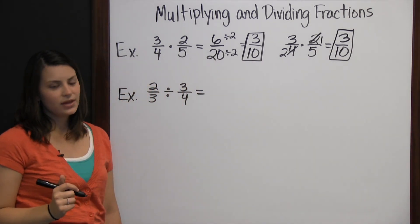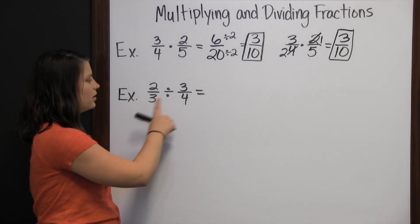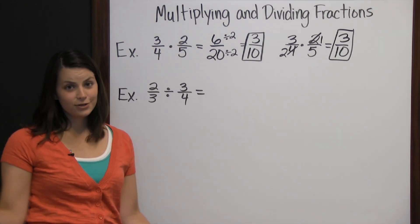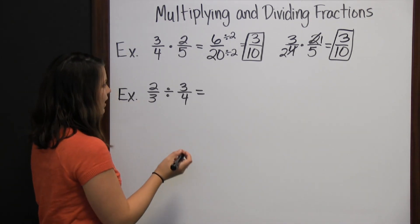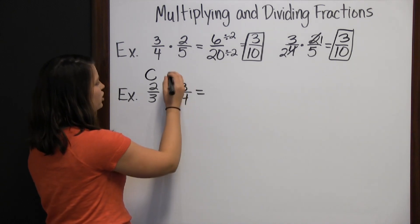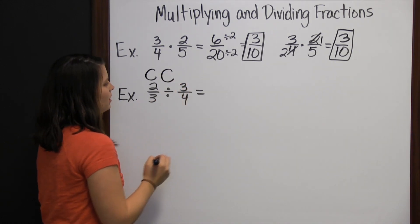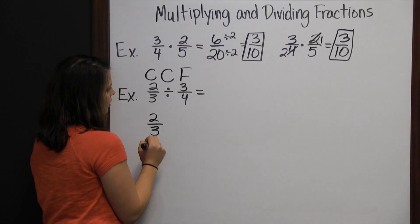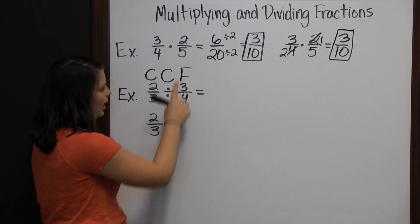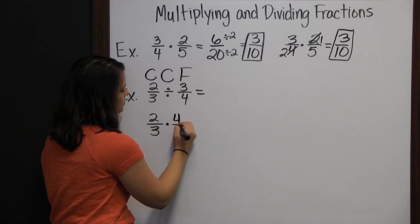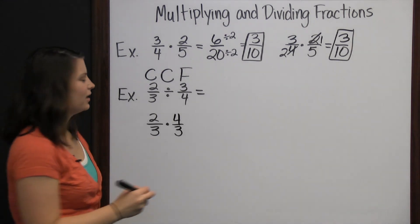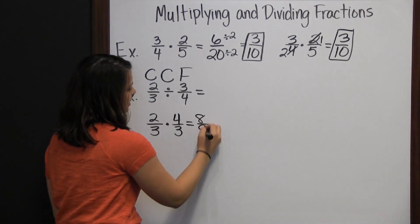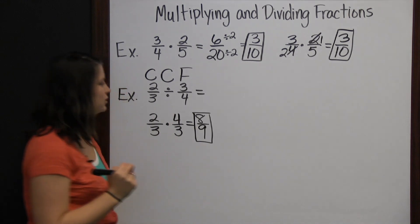Now let's look at division. We're going to divide 2 thirds by 3 fourths. When dividing fractions, we don't actually divide. Instead, we copy the first fraction, change division into multiplication, and flip our last fraction. So we copy 2 thirds, change division to multiplication, and flip 3 fourths to 4 thirds. Then multiply like normal: 2 times 4 is 8, and 3 times 3 is 9. 8 ninths is our answer.